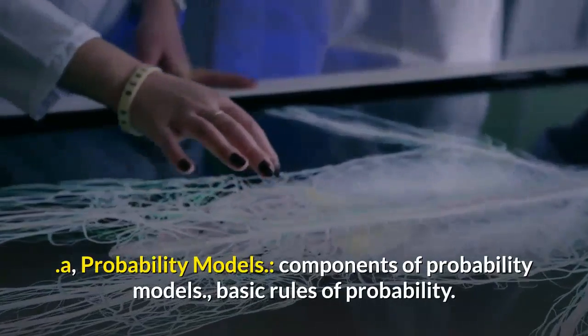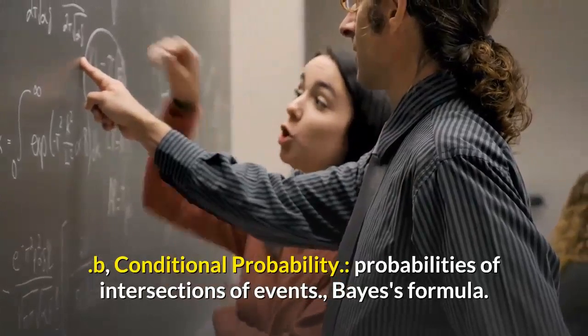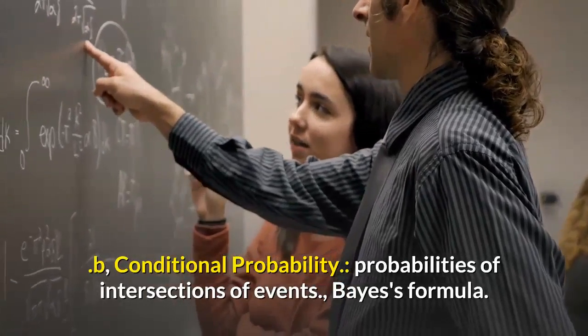Components of probability models, basic rules of probability. B. Conditional probability: probabilities of intersections of events, Bayes' formula.